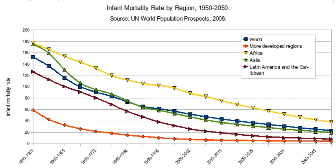In more developed countries such as the United States, there was a rise in infant deaths due to congenital malformations, mostly related to heart and central nervous system defects. In the 19th century there was a decrease in infant deaths from heart diseases, and from 1979 to 1997 there was a 39% decline in infant mortality due to heart problems.